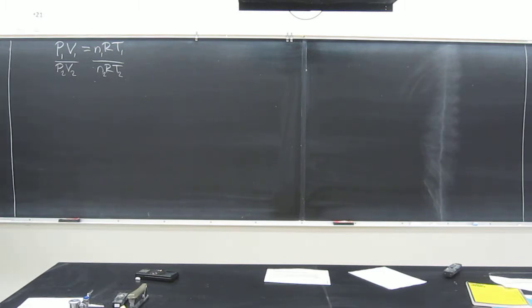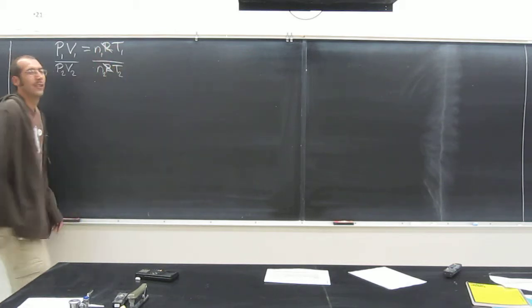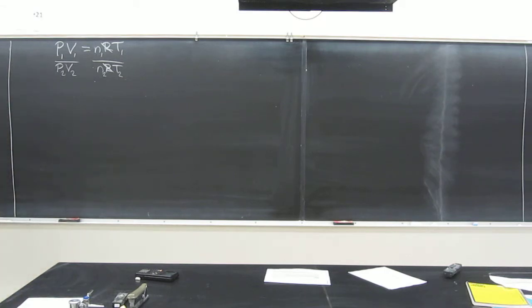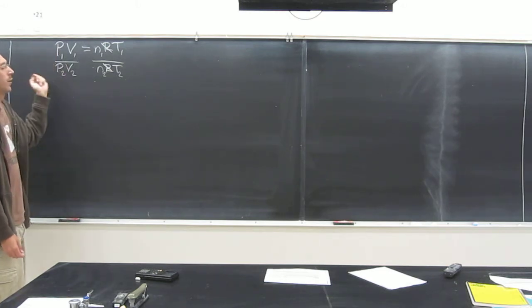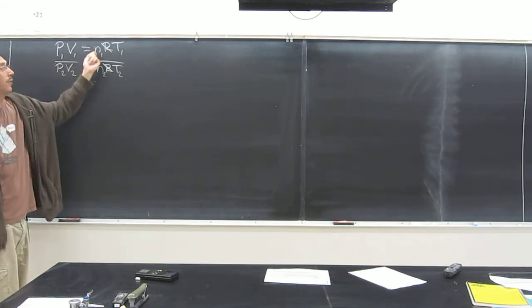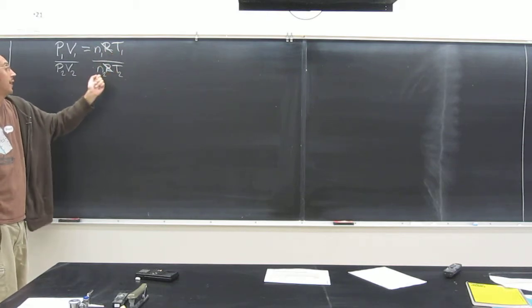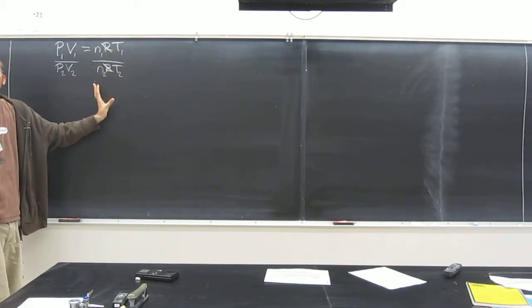It's just like 2 divided by 2 equals what? 1, right? So anything divided by itself equals 1. So R divided by R equals 1. So we just divide those up. So our equation now essentially is P1V1 over P2V2 equals N1T1 over N2T2. Is everybody cool with that?